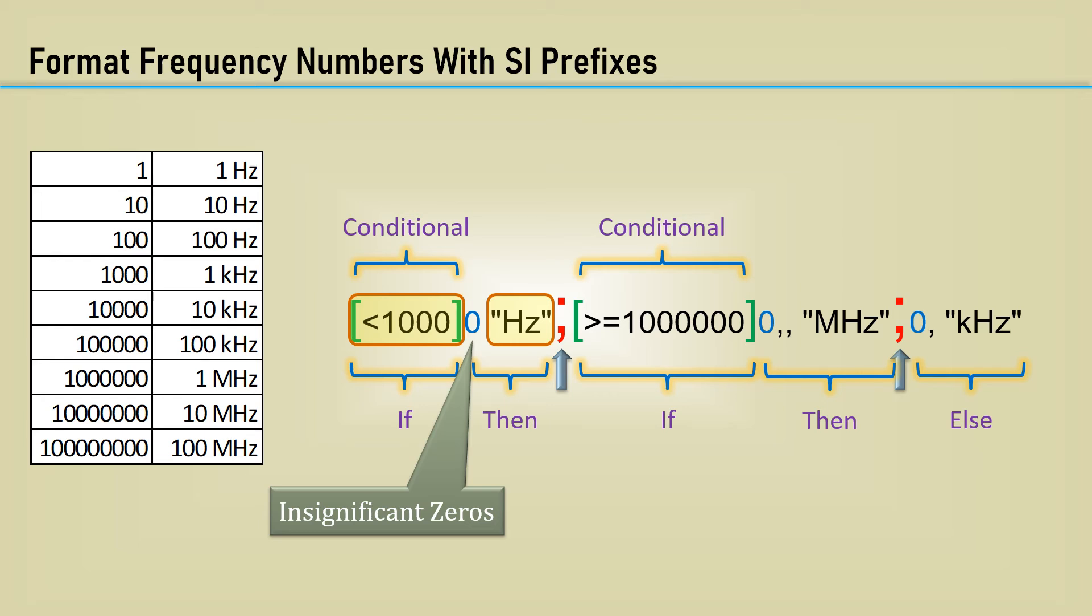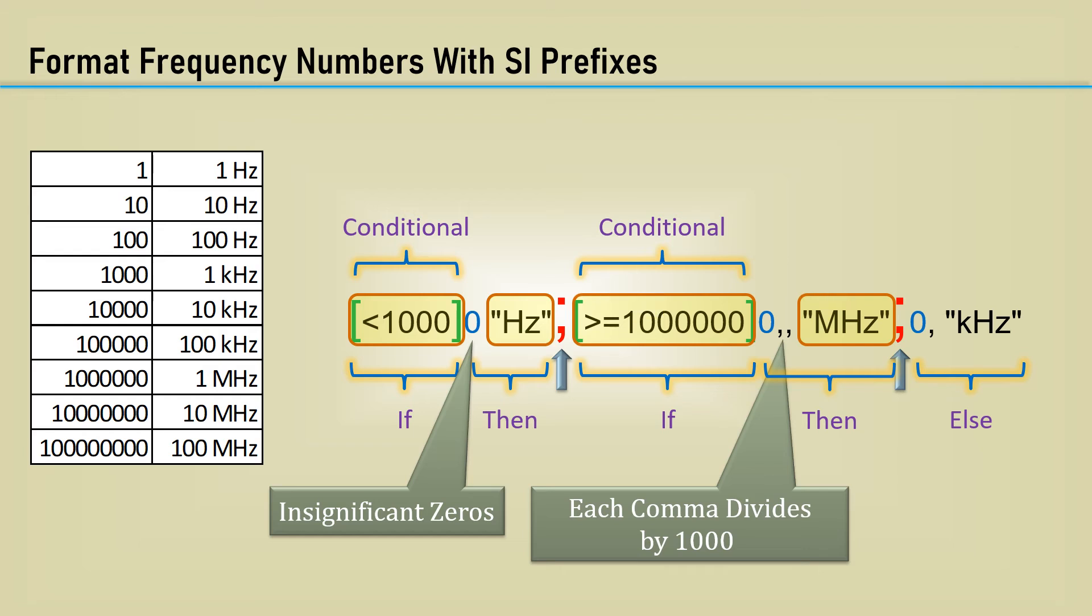Next is megahertz. The comma, representing thousands, like a thousands separator, divides the number by 1,000. Here, there are two commas, so it divides the number by 1,000 twice. Which, of course, is divided by 1,000,000 to scale the number to megahertz.